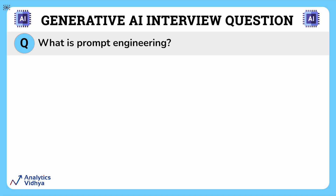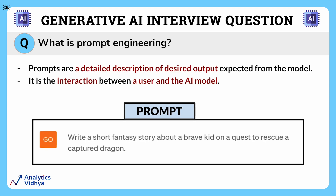What is prompt engineering? But before answering that, let us understand what a prompt is. A prompt is a detailed description of desired output expected from a generative model. In simple words, a prompt is like a question or a request you give to an AI model, and the AI model then understands that prompt and generates text based on it. It basically enables the interaction between a user and the AI model.